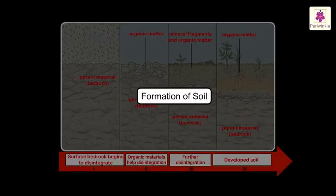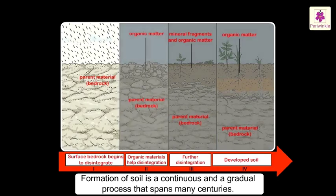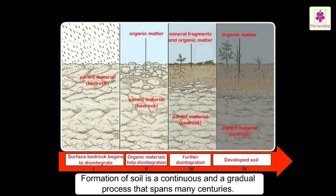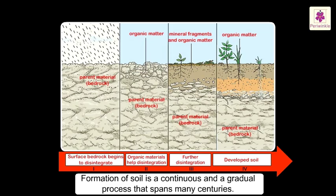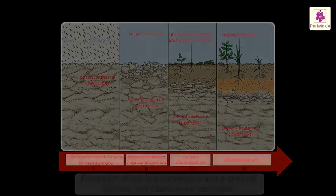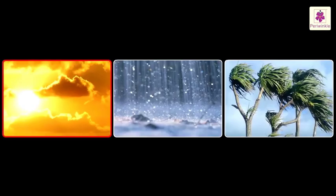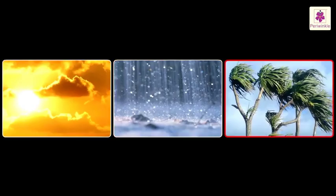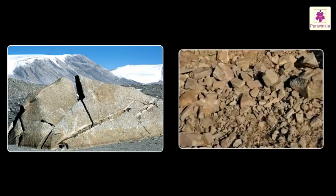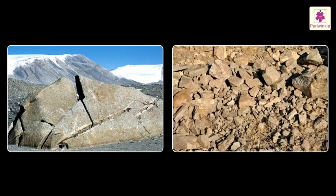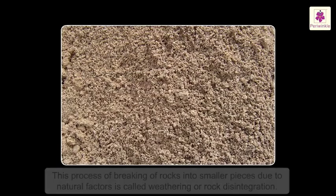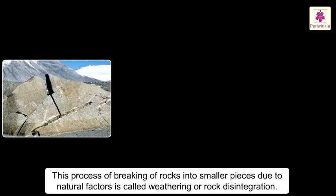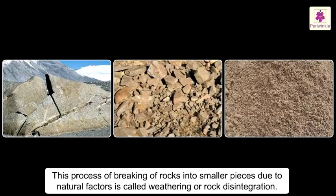Formation of Soil. Formation of soil is a continuous and gradual process that spans many centuries. Factors such as climatic changes, rain, wind, etc. break up rocks into smaller pieces which further get powdered. This process of breaking of rocks into smaller pieces due to natural factors is called weathering or rock disintegration.